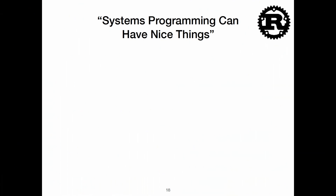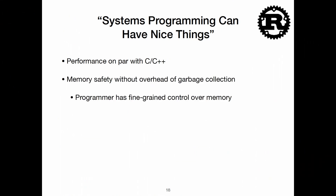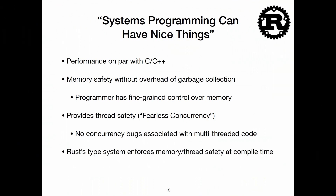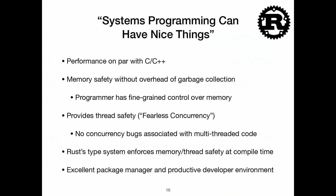The nice thing about Rust is that it's a systems programming language, but you get some of the nice features that higher-level language programmers get. Performance is on par with C++. You get memory safety without the overhead of garbage collection, which is important in embedded, networking, and kernel applications. The programmer still has fine-grained control over memory. Rust also provides thread safety — what the Rust people call fearless concurrency — so you don't have concurrency bugs and data races associated with multi-threaded code. Rust has a powerful type system that enforces memory and thread safety at compile time. It also has an excellent package manager and really good tools.